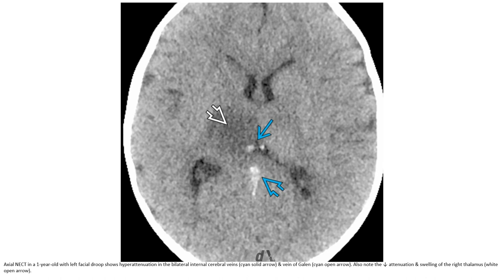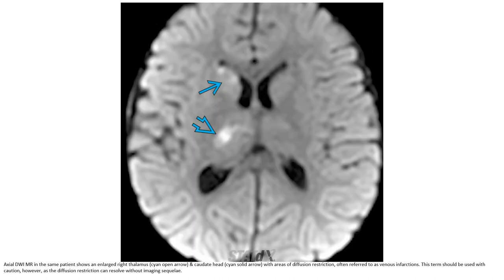Non-contrast CT in a 1-year-old with left pressure drop: hyperattenuation in the bilateral internal cerebral vein and vein of Galen. Also note the decreased attenuation and swelling of the right thalamus. DWI in the same patient: enlarged right thalamus and Galen with areas of diffusion restriction, often referred to as venous awareness. This term should be used with caution, however, as diffuse restriction can resolve without imaging sequelae.